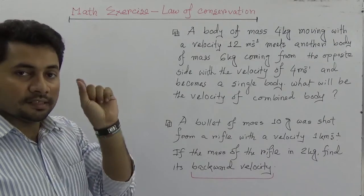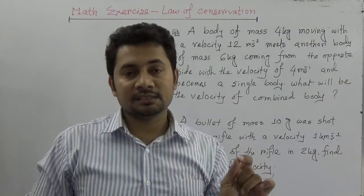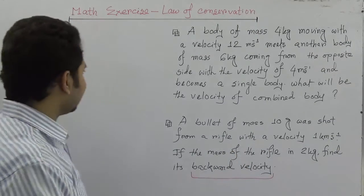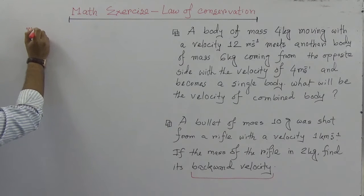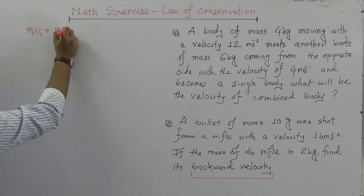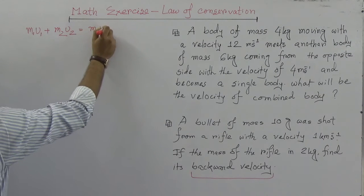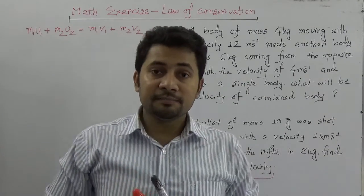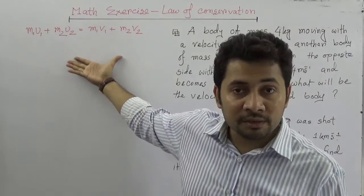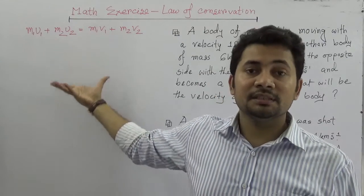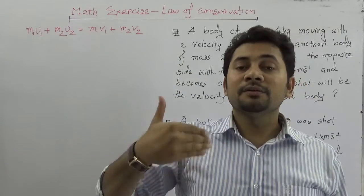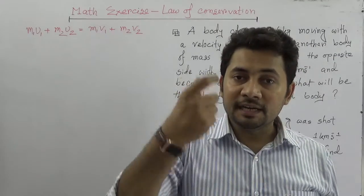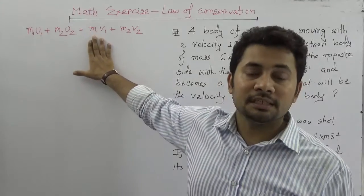If we think back to what we discussed earlier about the law of conservation, we got an equation which is m1u1 plus m2u2 is equal to m1v1 plus m2v2. We already proved in my previous class how we got these equations and how we deduced these equations from Newton's third law. We know that each and every action has its equal and opposite reaction, and from that point of view we deduced these equations.